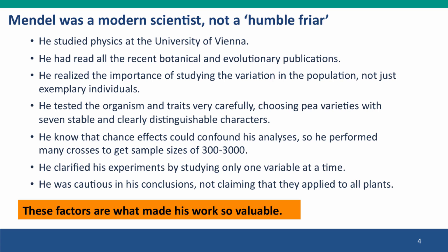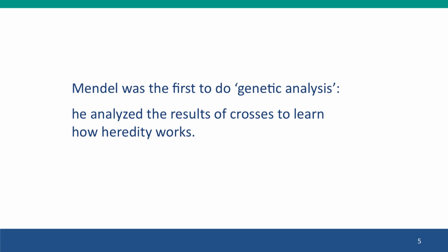He was cautious in what he claimed his results showed. He didn't say they applied to everything, even to all plants. He said that these were the conclusions that must be true to explain what he saw in peas. These factors — the way that he did his science — are entirely responsible for the high quality of his results. From a modern perspective, we would say he was the first to do what we call genetic analysis, which is what you're going to be doing in this module. He used the results of crosses to make inferences about how heredity works and about how phenotypes are determined.